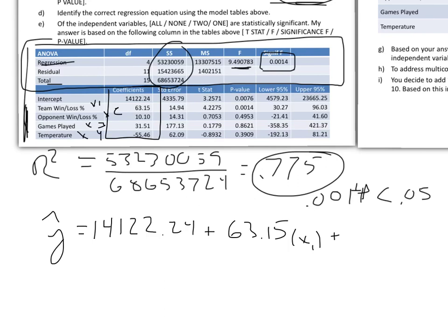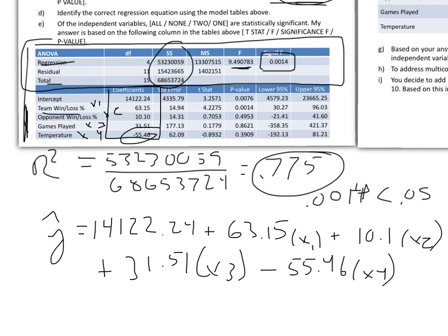Then opponent win-loss is plus 10.1 x2, plus 31.51 x3, which is games played, and then minus 55.46 x4. The reason that's minus 55.46 x4 is because this is negative. The temperature is negatively correlated. The game attendance is less when probably the temperature is colder, I would guess. When the team has a good winning percentage, when the team is doing well, there's more attendance. When you play a good opponent, that also draws people in. Also, the number of games played, if there's more on the line later in the season, perhaps. Those things look like they make sense, the way that the correlation is moving. That equation is the answer to part D.